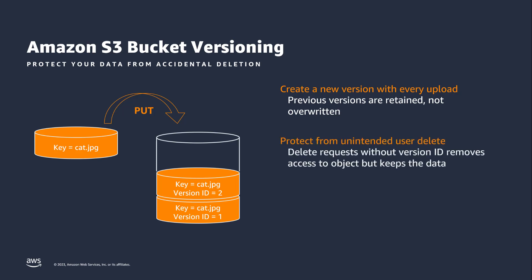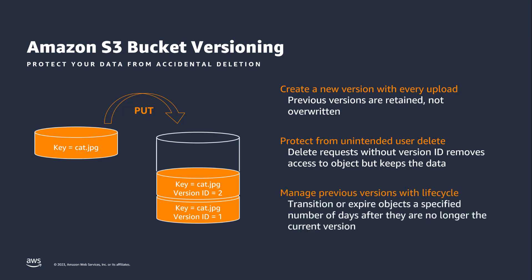Versioning can help you recover objects from accidental deletion or overwrites. If you attempt to delete an object, S3 inserts a delete marker instead of removing the object permanently, and you can always restore the previous version of an object. To manage your objects so they are stored cost efficiently, you can define a lifecycle configuration. This allows you to transition objects to a different S3 storage class or expire them a certain number of days after they become the non-current version.